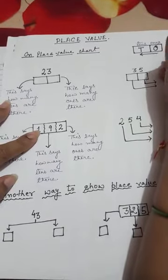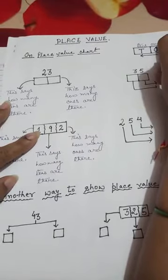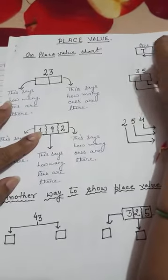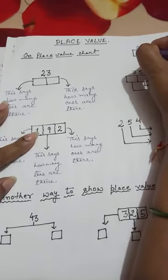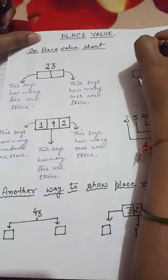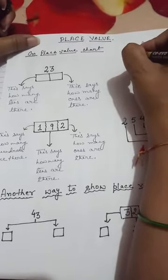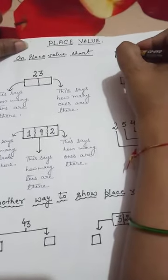In class 1, you learned that from the extreme right position, the first position comes for ones, and the second position comes for tens. In class 2, you are going to study another place value, that is 100.